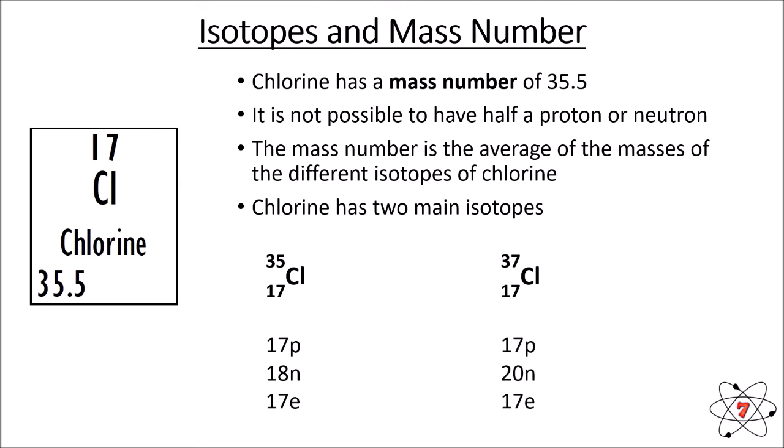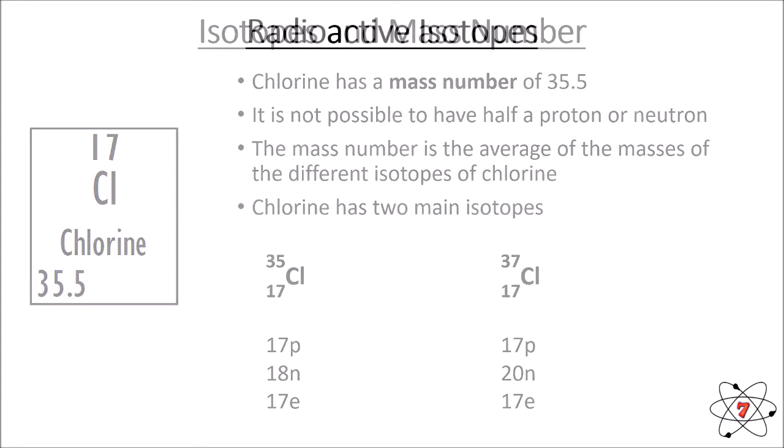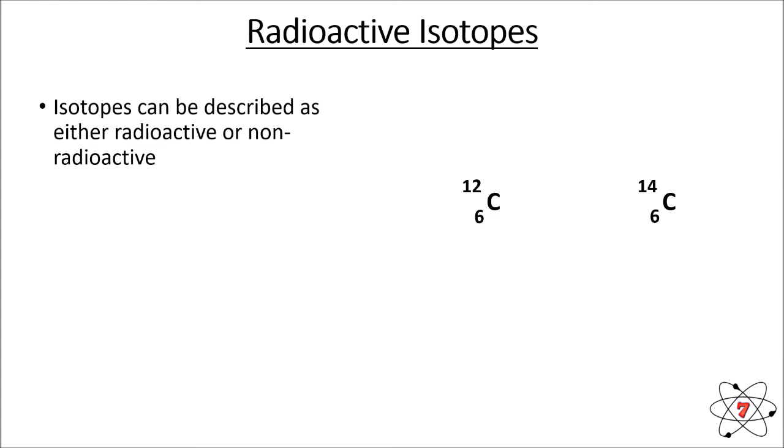We can see that the number of neutrons varies in each isotope of chlorine: one isotope has 18 neutrons in its nucleus, the other has 20 neutrons. But the number of protons and the number of electrons never changes. It's also worth understanding that some isotopes can be described as radioactive and others are non-radioactive.